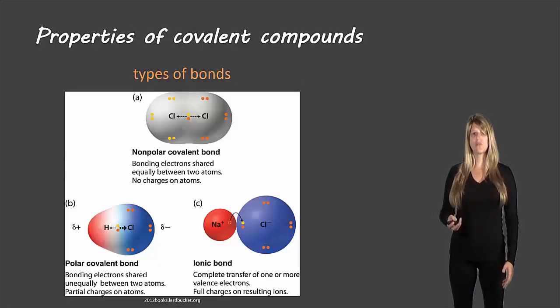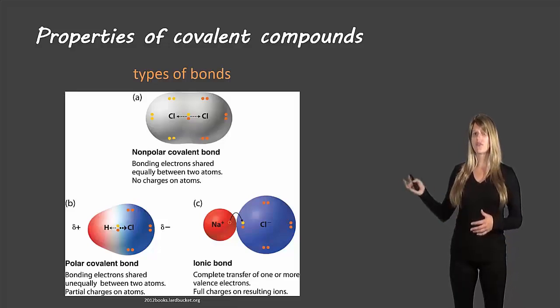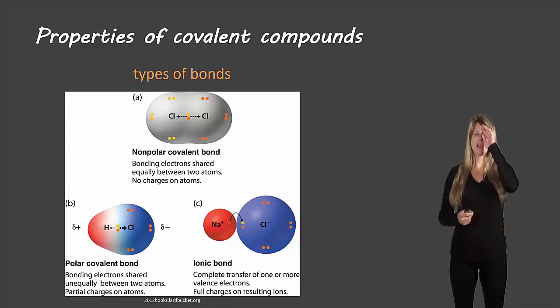First, let's review the different types of bonds. Starting with the bottom right, we have ionic bonds. We've already taken a look at the properties of ionic bonds, and we can remember that ionic bonds form when an electron transfers from one atom to another.